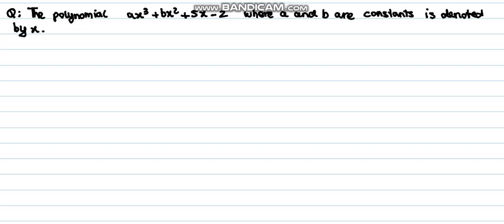The question says that the polynomial ax³ + bx² + 5x - 2, where a and b are constants, is denoted by p(x).